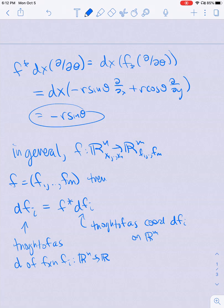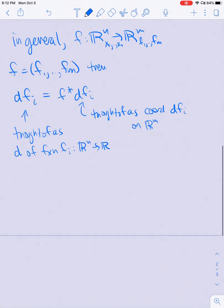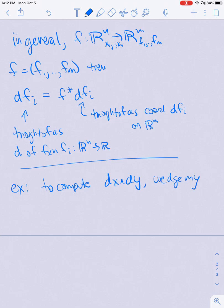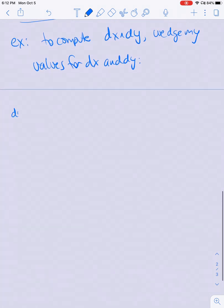If I want to compute something more complicated, like a wedge product of differential forms, I'll do an example. To compute something like dx wedge dy, I just wedge my values for dx and dy. dy I can compute as f pullback dy, which is, using my same method, this is going to be sine theta dr plus r cosine theta d theta.